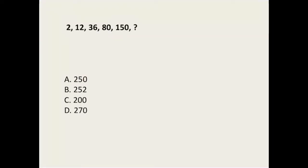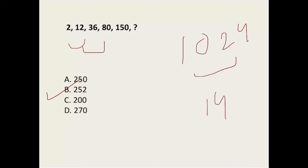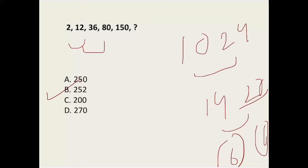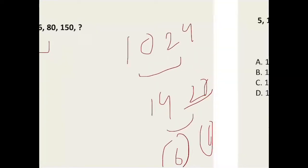The series is 2, 12, 36, 80, 150. Take differences: 10, 24 — and the differences of differences give a common difference of 6 when continued. These are series where you take differences and then differences of differences. Adding all those differences forward, the right answer is B — 252 is the right answer for this series. Solve it and comment below if you have any query.